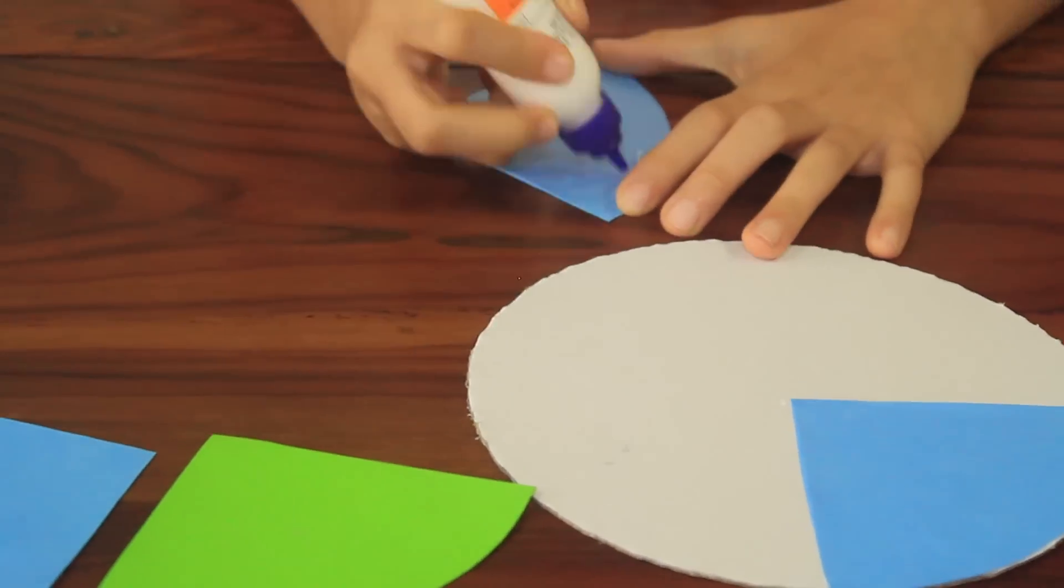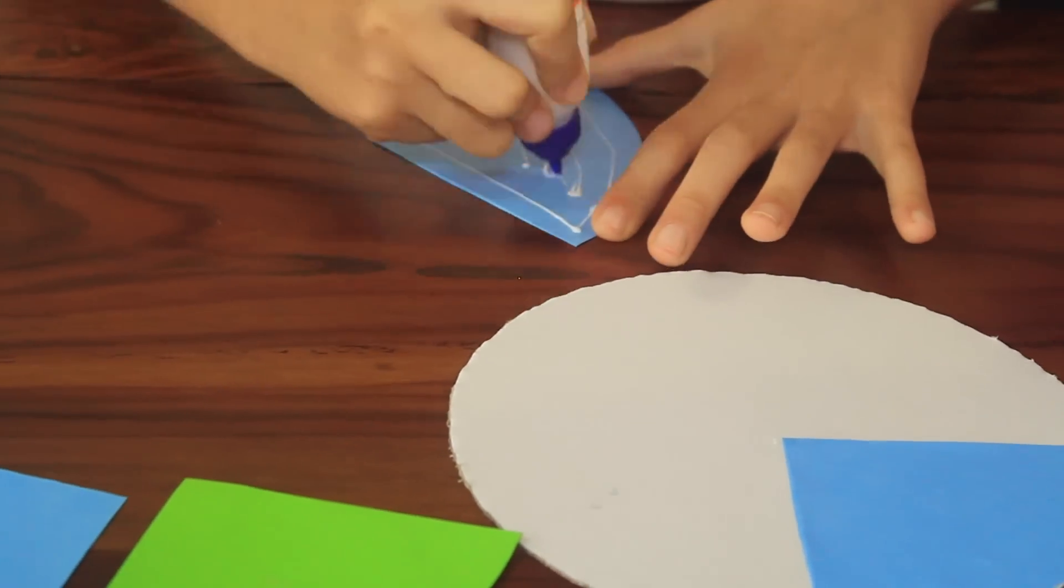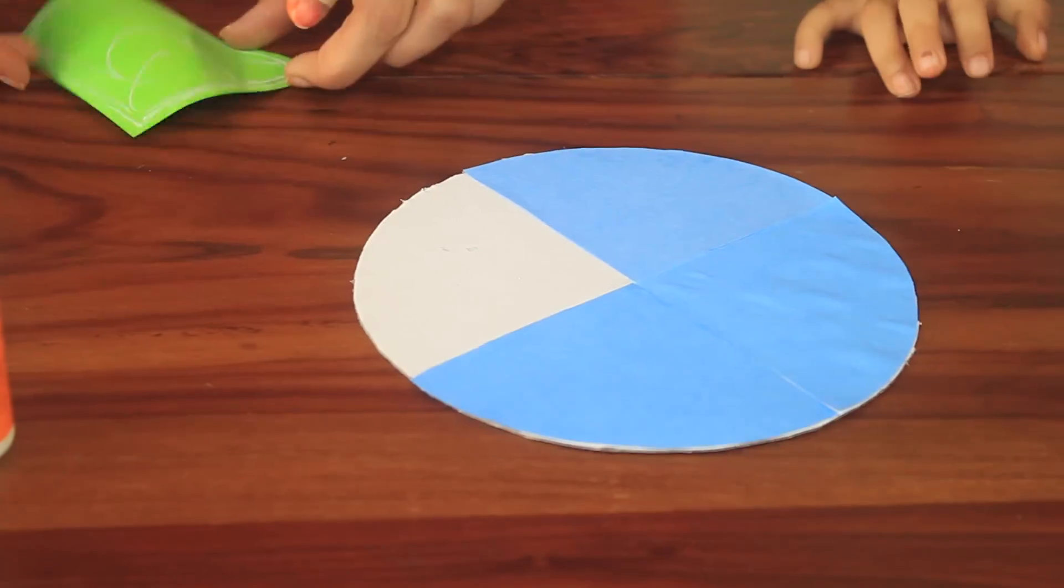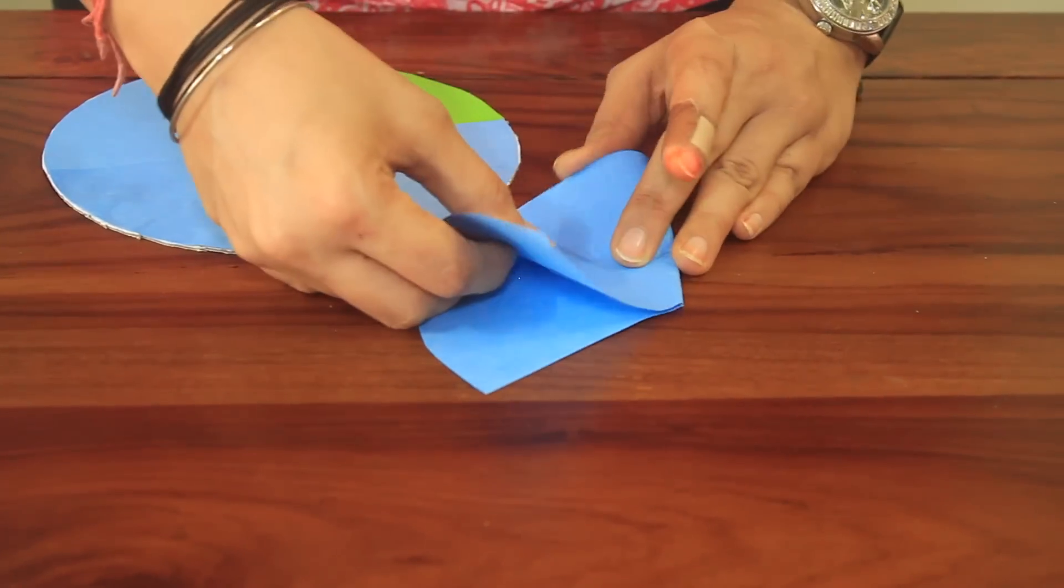Use 3 of these cut quarters to cover the base of the earth. Cover the last quarter in green, depicting three-fourths of the earth is water and one-fourth land. Now take the circles with remaining three-fourths part.